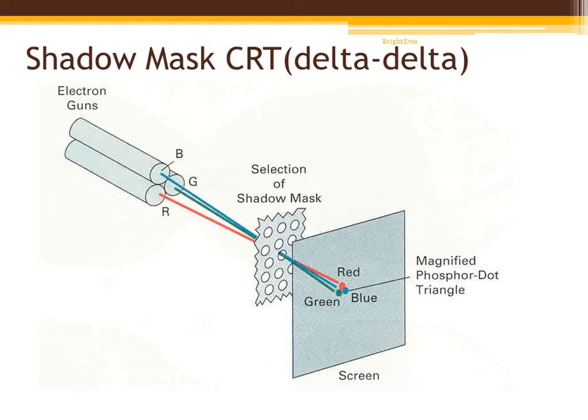Now we come to the next type, shadow mask CRT. Here I have taken the delta-delta method; there is also an inline method, with only a slight difference between them. In shadow mask CRT, it provides a wide range of colors. It has three phosphor color dots at each pixel position — red, green, and blue — arranged in a triangular fashion. All pixels contain this arrangement of red phosphor, green phosphor, and blue phosphor dots in a triangular manner.